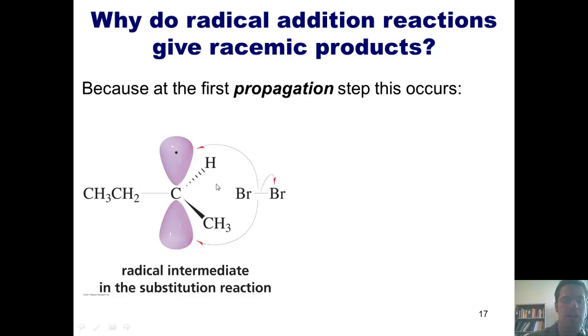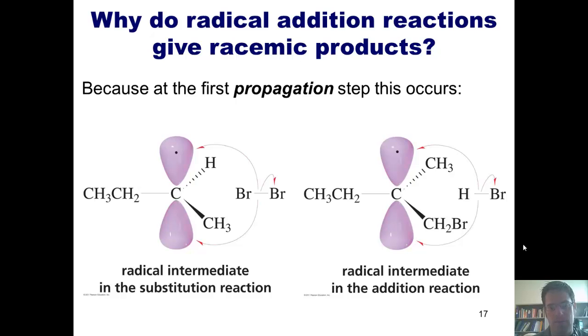By doing so, it gives rise to both enantiomers, the one in which the bromine is pointing up as well as the one in which the bromine is pointing down. The same is true of doing radical reactions with Cl2 as well as HBr. You end up getting totally racemic products.